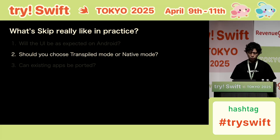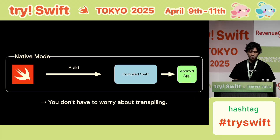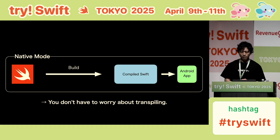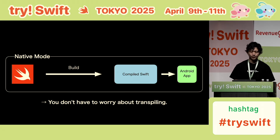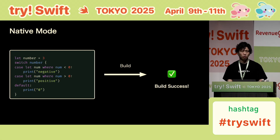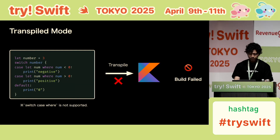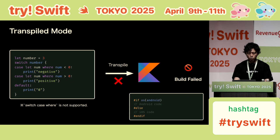Next, should you choose transpile mode or native mode? Both modes have advantages and disadvantages, but I recommend native mode. The main reason is that you don't have to worry about whether the APIs can be transpiled. For example, this API can be built in native mode. However, in transpile mode, this API cannot be transpiled. Therefore, you will need to either use a different API or separate the processing with compiler directives.